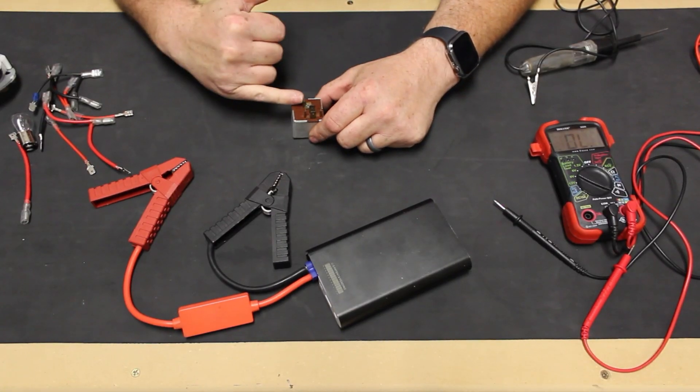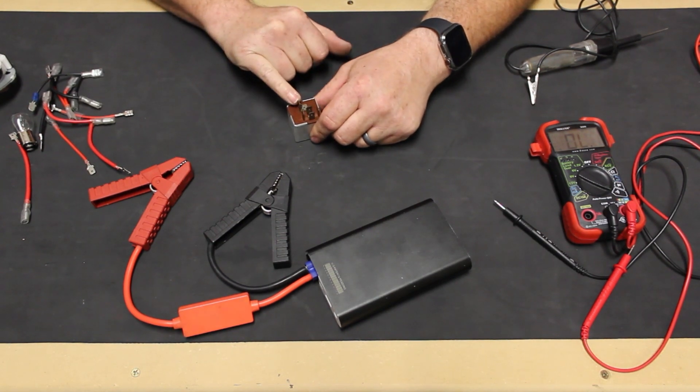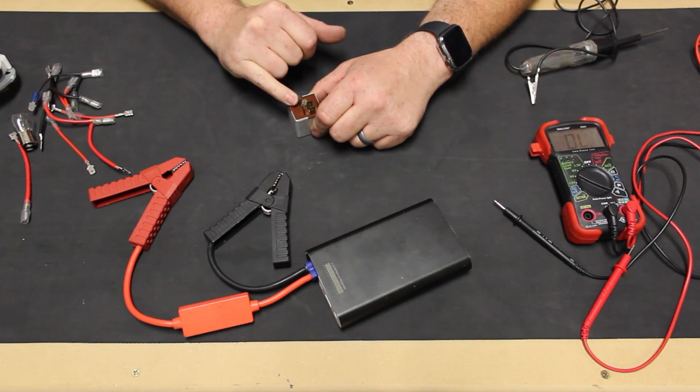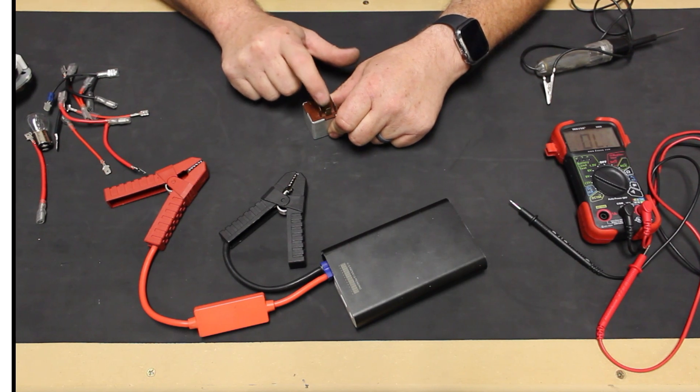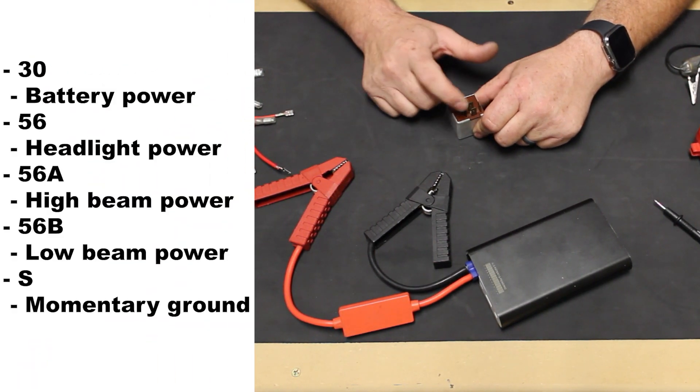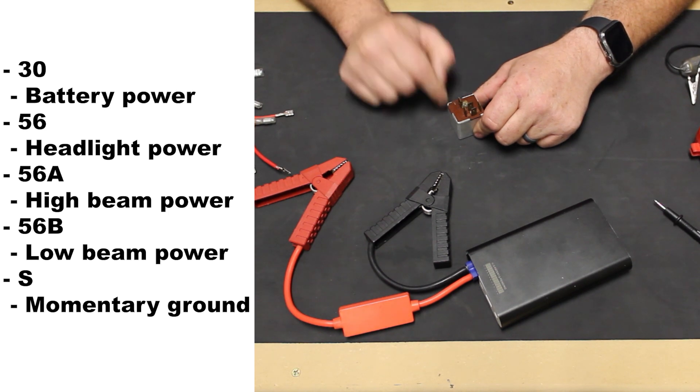Next up, we'll test our headlight relay. We have a late model headlight relay, which has a fifth terminal labeled 30 that earlier relays typically don't have. The 30 terminal must have power for the relay to operate. The other terminals are 56, 56A, 56B, and S.